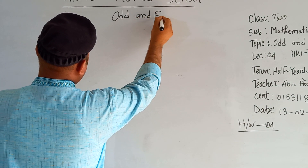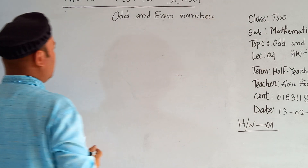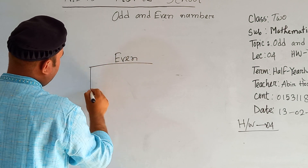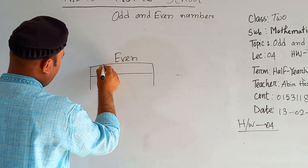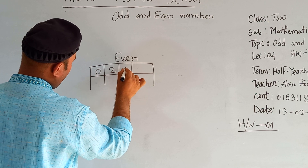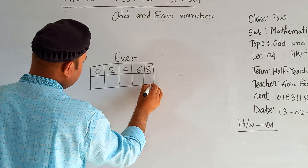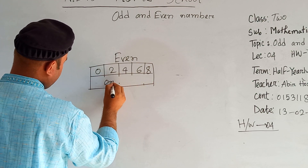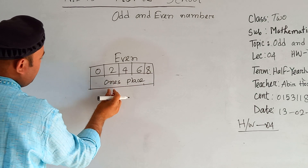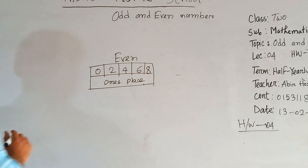Now my dear students, let's start our class on odd and even numbers. Even number: if any number consists of zero, two, four, six, and eight — if any number contains these digits at the one's place — then it is called an even number.